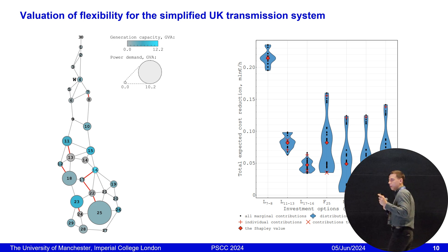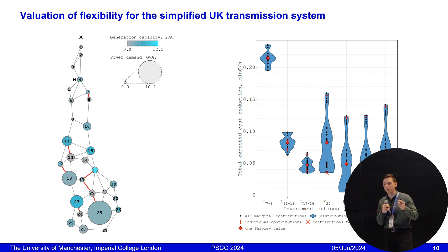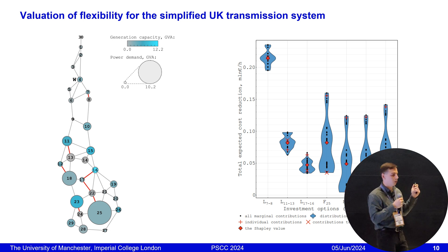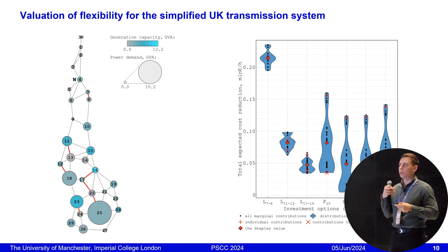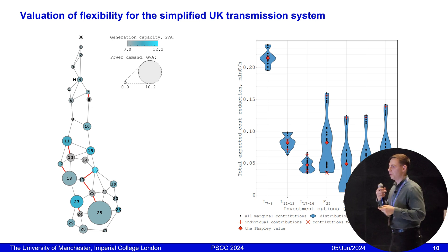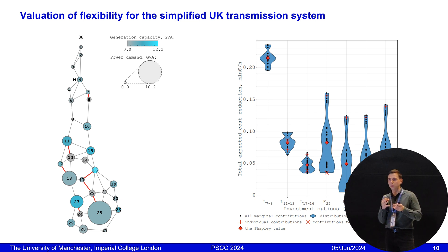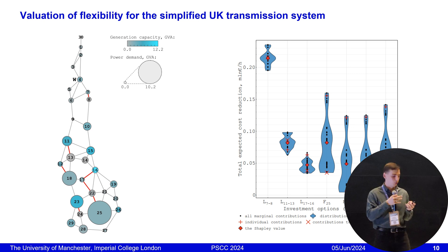Interestingly, for the UK case, once we changed our objective function and analyzed cost savings, it turns out that one line in the north is more beneficial and brings more benefits. So here is an interesting insight: depending on the objectives of the system operator, investments in flexibility or lines can bring completely different values — sometimes reducing curtailment or sometimes reducing costs.